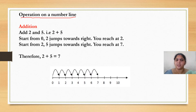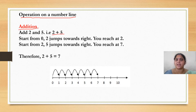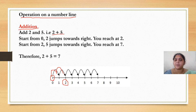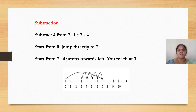Operations on a number line means how to do addition, subtraction, multiplication, or division — we are having 4 mathematical operations. The first one is addition. I have taken 2 digits: 2 and 5. Start from 0 and take 2 jumps towards the right — you reach 2. Next, take 5 jumps towards the right: 1, 2, 3, 4, and 5 — you will be reaching number 7. So, 2 plus 5 is equal to 7.